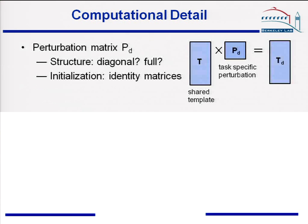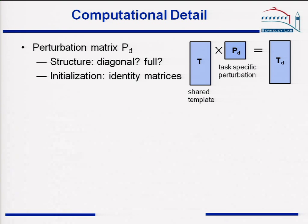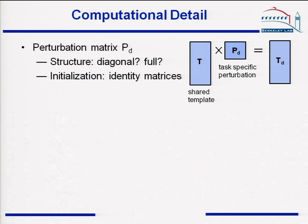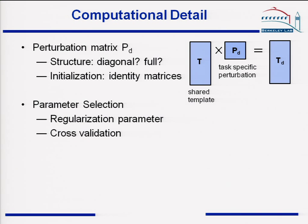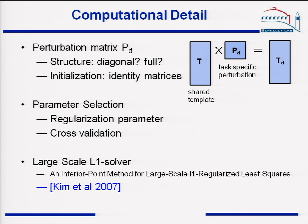Briefly, some computational details: for the perturbation matrix P_d, we initialize it as identity matrices and keep it diagonal throughout the iterations, which means the different phenotypic responses are independently scaled. In practice, one might also try a full perturbation matrix, which might lead to lower reconstruction error, but the optimal structure is still an open problem for future research. We also use cross-validation to choose regularization parameters for the L1 optimization. The large-scale L1 solver is an interior point method from Stanford.